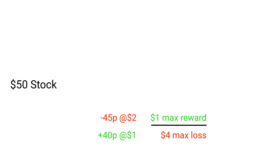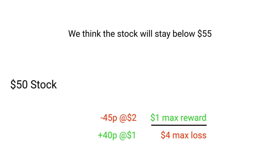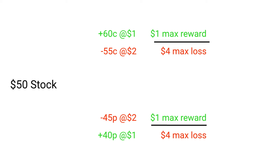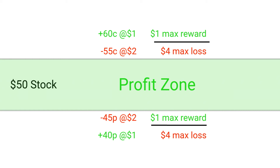Our analysis also says that we think this stock will stay under $55 for the next month. So let's add a bear call spread that says we'll profit if the stock stays below $55. We're getting a $1 credit on this trade as well. It's also a $5 spread, which means this trade has the same return on risk as the bull put spread. By putting both of these trades on the same stock at the same time, we're trying to profit off of the stock staying in a specific range. As long as the stock stays between $45 and $55, we could profit on both of these spreads.